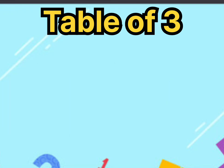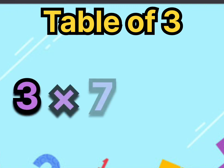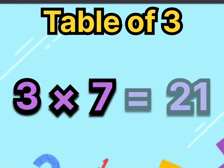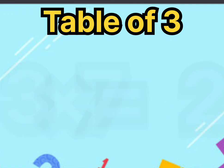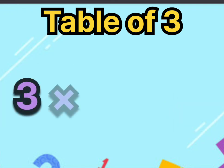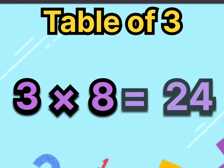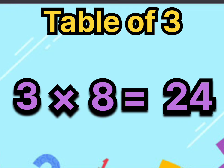Three eights are twenty-four. Say it again, three eights are twenty-four. Three nines are twenty-seven. Say it again, three nines are twenty-seven.